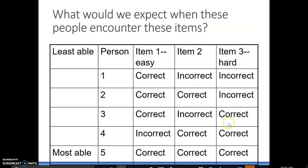Then we have these middle groups. Both person three and four got item three correct, but person four also got item two correct, which is harder. Person three got item one correct, which is easier, and missed the other two. Since item two is harder to get correct and person four got it correct, they have more ability. Remember, we're mostly talking about correct and incorrect, but most of what we do in social sciences are rating scales, so we can talk about endorsements — more positive or negative feelings on attitude scales, more or less frequent responses. Those are the patterns that help us tease out different abilities and understand which items are harder or easier.